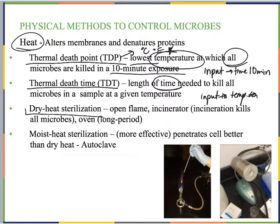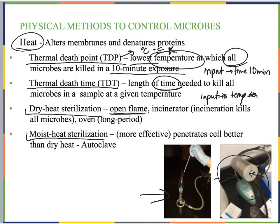We have two different types of heat: dry heat and moist heat. For dry heat, this is what we utilize most often in the laboratory — using an open flame like a Bunsen burner or an incinerator to sterilize our inoculating loop. We also have dry heat sterilization in an oven, cranking it up to around 700 degrees. This takes a longer period of time compared to an open flame.